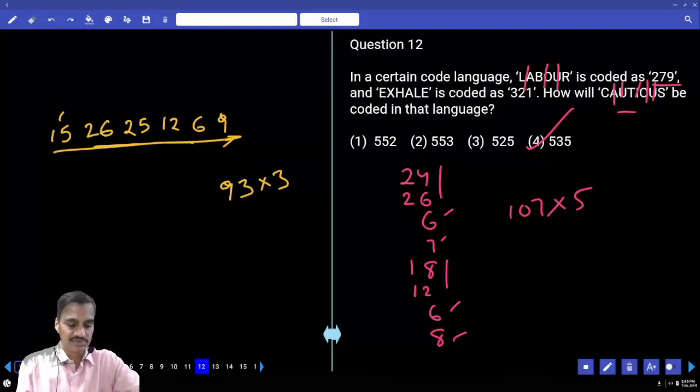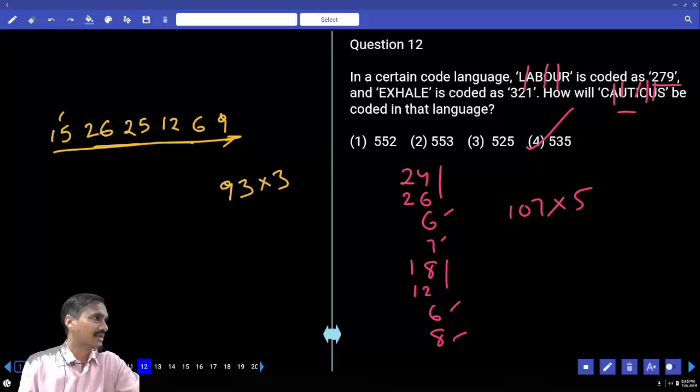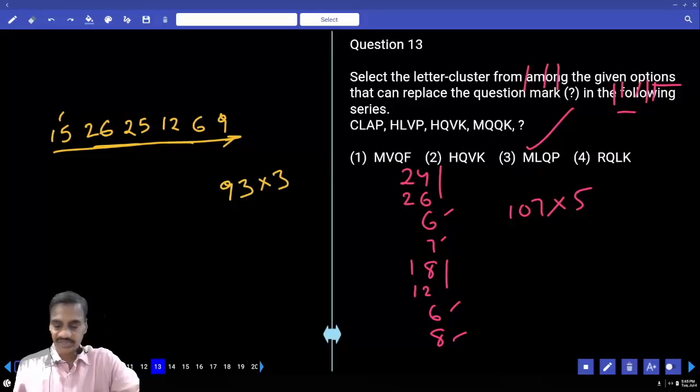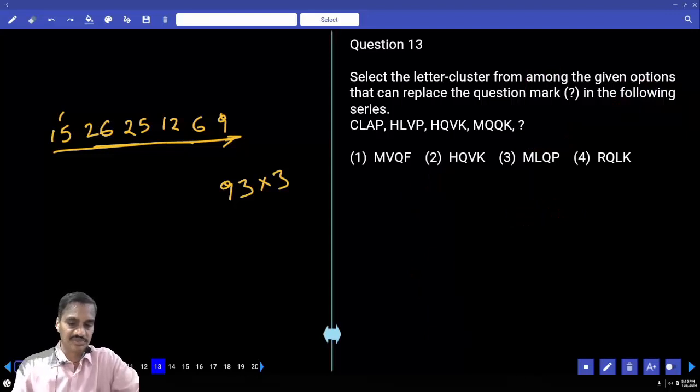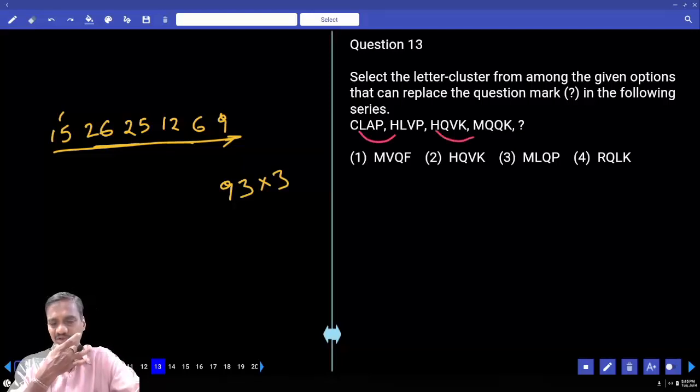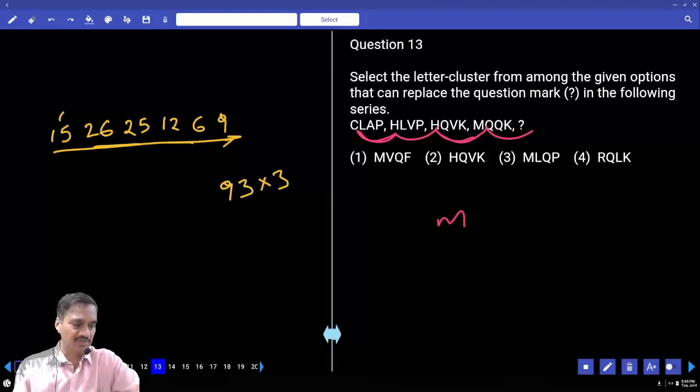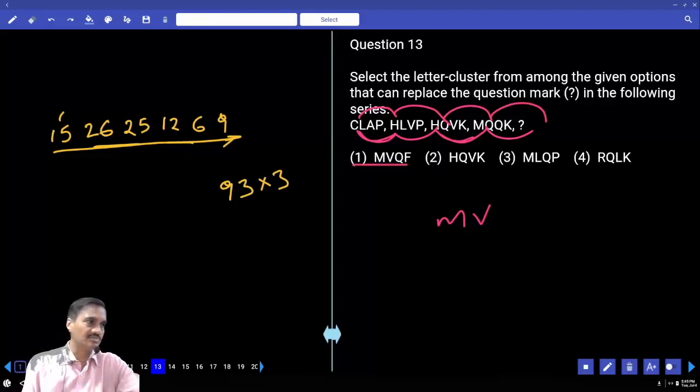Question thirteen: letter cluster replacement. CLAP, HLVP, HQVK, MOQK. C to H difference is +5. C to H +5, then +5, +0, +5, +0. Pattern: first letter M, second L is common, N+5 is Q (common), +5 is V. Answer is MVQP, choice one.